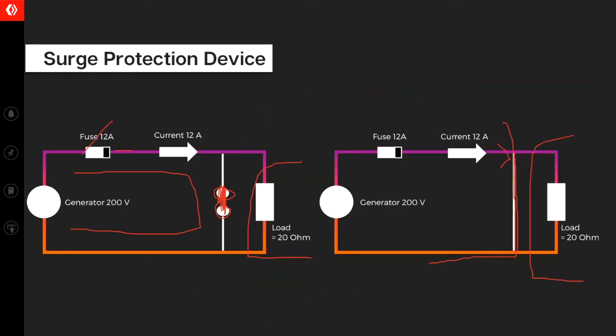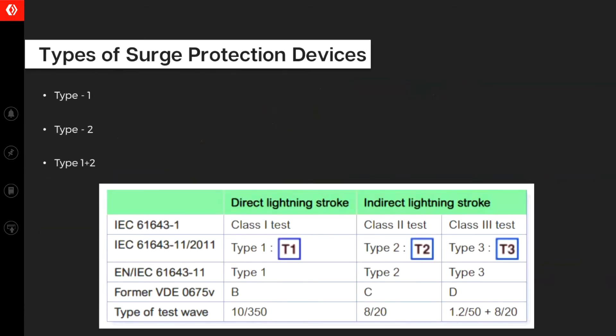The surge protection device is of three types. It's type 1, it's type 2 and it's type 1 plus 2. There is even a type 3, but type 1, 2 and 1 plus 2 are most widely used. Type 1 is for direct lightning strikes. So if you have a circuit where there is a probability of direct lightning striking on it, it's type 1.